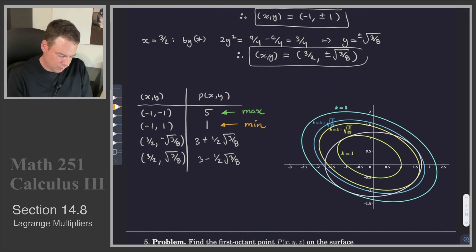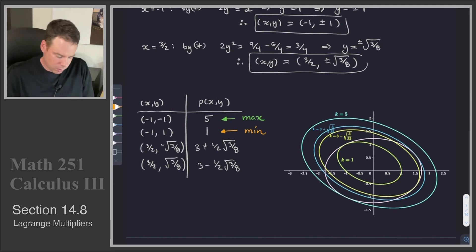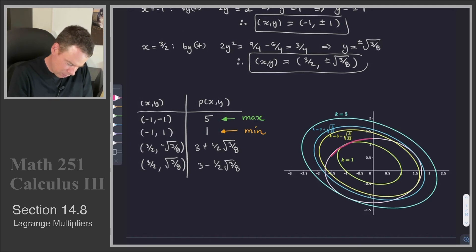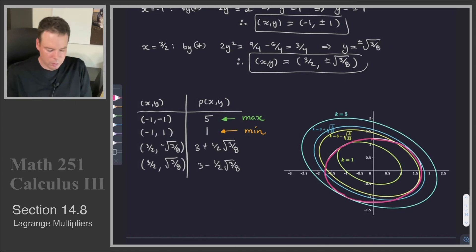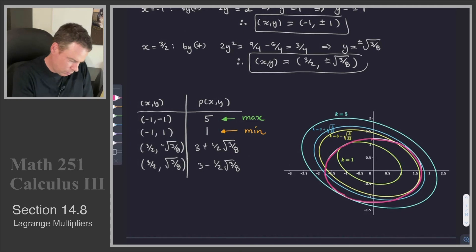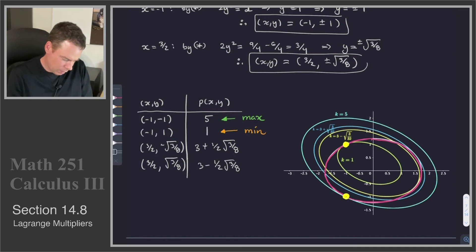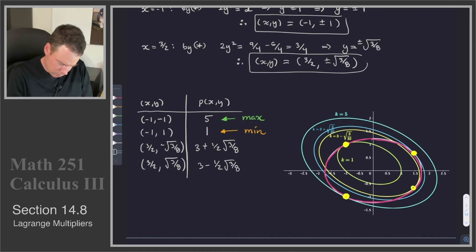It helps to look at the visual. The constraint curve — plotted here in grey — is shown on the graph. What we did was find all points where the level curve at that point is tangent to the constraint curve. The four points we found are: (-1, 1) in the upper left, (-1, -1) below it, and the two points at x equals 3 halves with y equals plus or minus root(3/8).